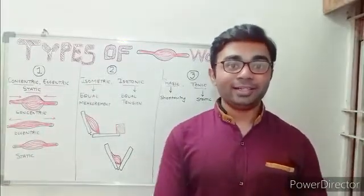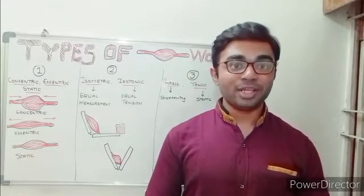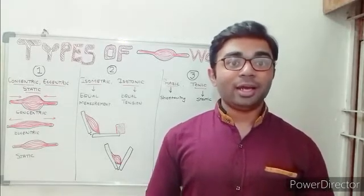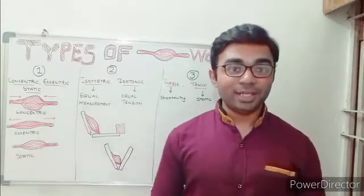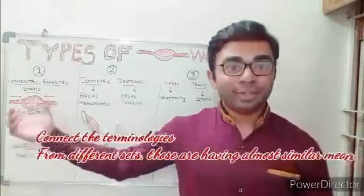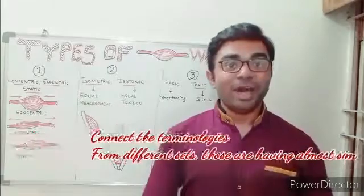The second thing is: how many types of muscle work can you relate in these examples? For example, concentric muscle work is related with which other type of muscle work?